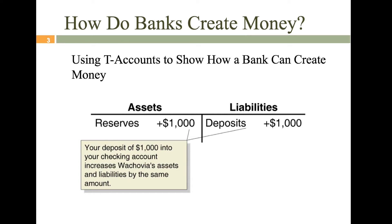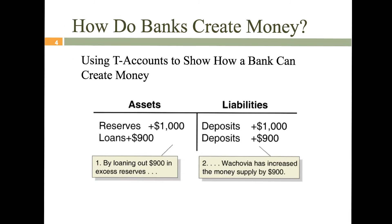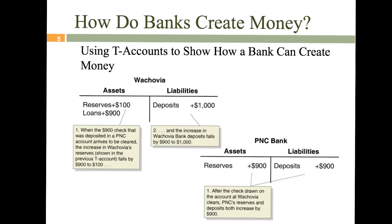Moving on to banks creating money — what we're showing here is just if somebody walked in the door and made a $1,000 checking account deposit: their liabilities would increase by $1,000, and initially their reserves have increased by $1,000 as well. Since the bank is not required to hold the full $1,000 on hand, assuming a required reserve ratio of 10%, the bank would take 90% of this initial deposit and lend it out. The initial deposit was $1,000, the bank makes a loan of $900, and that $900 loan is more likely taken over to a second bank — say PNC — where they make a $900 deposit and increase reserves there.